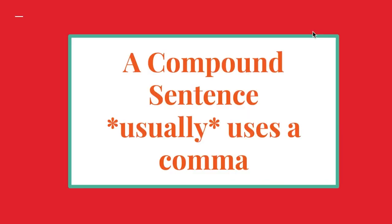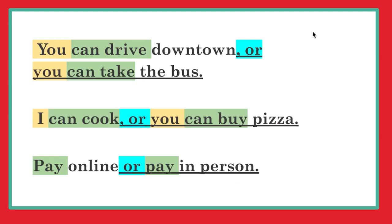A compound sentence usually does use a comma. Look at the commas. The difference is the sound — if you do not pause, like 'pay online or pay in person,' there is no pause, so we don't need a comma. Okay, I hope that helps you.